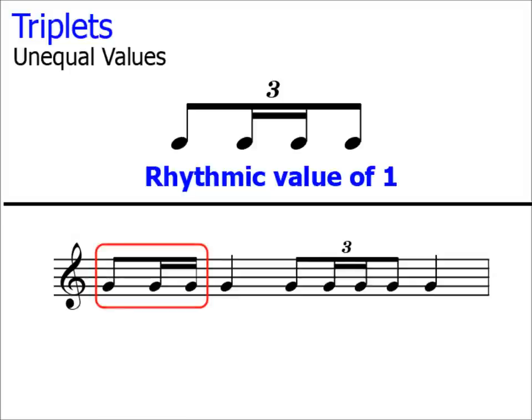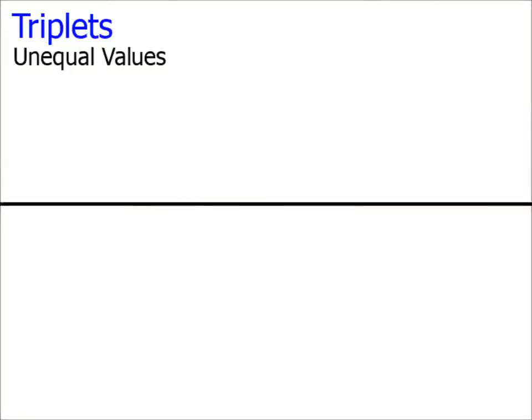Let's place it in a bar of 4-4 so we can see it exactly. Here's beat 1, here's beat 2, beat 3 with our 4 note triplet and here's beat 4. As I say, calculating triplets when the values are unequal is a little trickier than triplets where the values are equal. However, it does get easy with practice as I said.